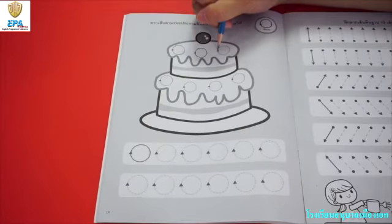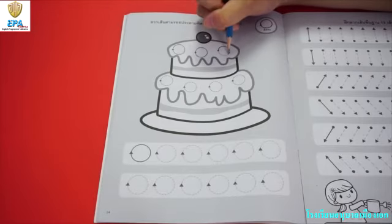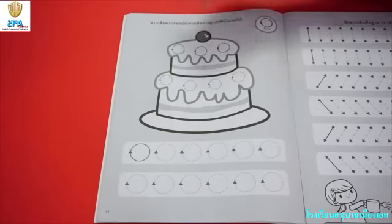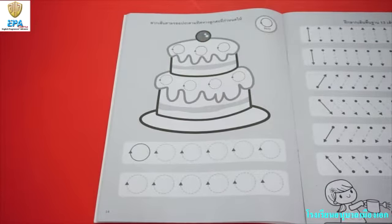And then you close the circle. One more time. Make a curve line. Then go down and close the circle.